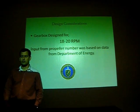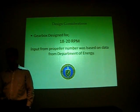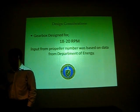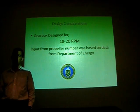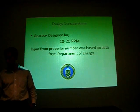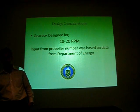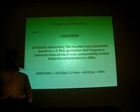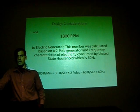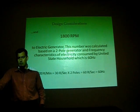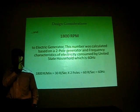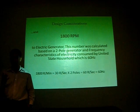The input of our gearbox will have a range from 18 to 20 RPM. This data was acquired from documentation we gathered from the Department of Energy, which is included in our report as a reference. The exit rotation speed of our gearbox will be 1800 RPM. This number was calculated based on the two-pole generator to create a frequency of 60 hertz.